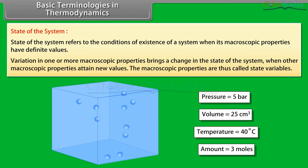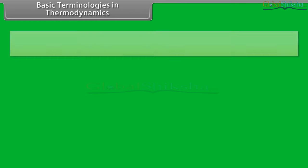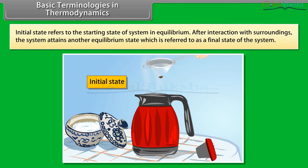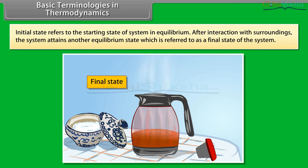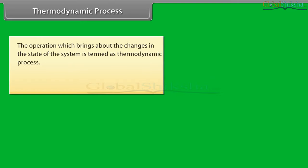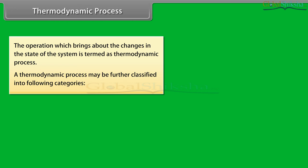Once these minimum numbers of macroscopic properties are fixed, the other properties automatically acquire definite values. Variation in one or more macroscopic properties brings a change in the state of the system when other macroscopic properties attain new values. The macroscopic properties are thus called state variables. Initial state refers to the starting state of the system in equilibrium; after interaction with surroundings, the system attains another equilibrium state, referred to as the final state. The operation which brings about changes in the state of the system is termed a thermodynamic process.